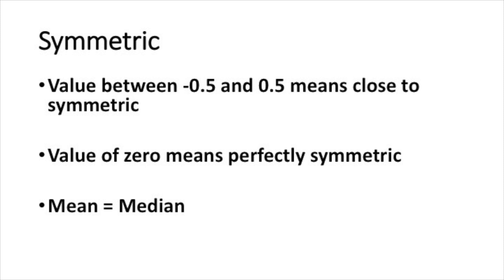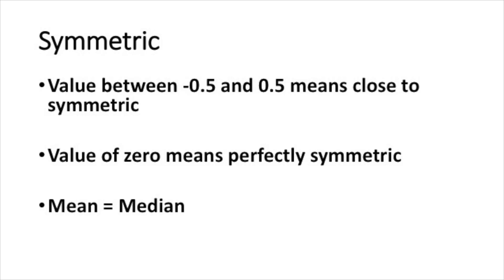The skewness statistic can also indicate whether a distribution is symmetric. As a rule of thumb, a skewness value between minus 0.5 and positive 0.5 — values closer to 0 — means the distribution is close to symmetric. A value of exactly 0 means it's perfectly symmetric, and in that case the mean exactly equals the median.